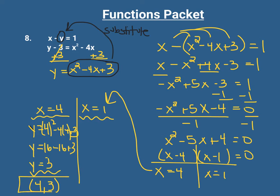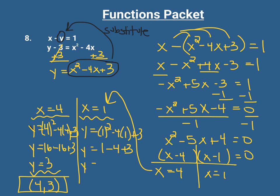Now let's substitute x equals 1: y equals 1 squared minus 4 times 1 plus 3. So y equals 1 minus 4 plus 3 — that's negative 3 plus 3, which equals 0. So our second coordinate is (1, 0). These are our two answers.